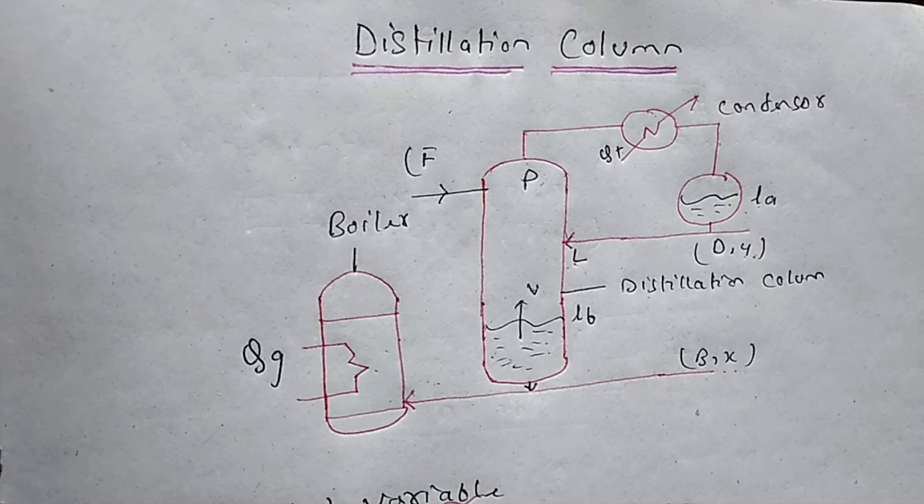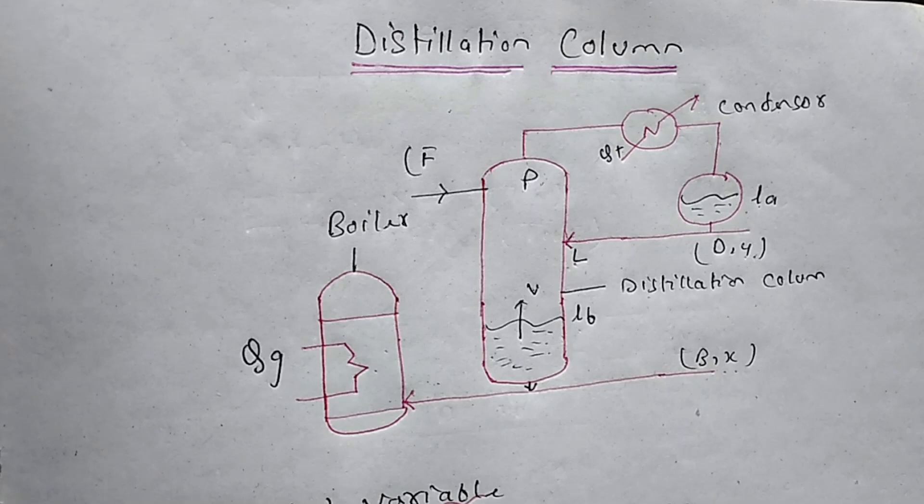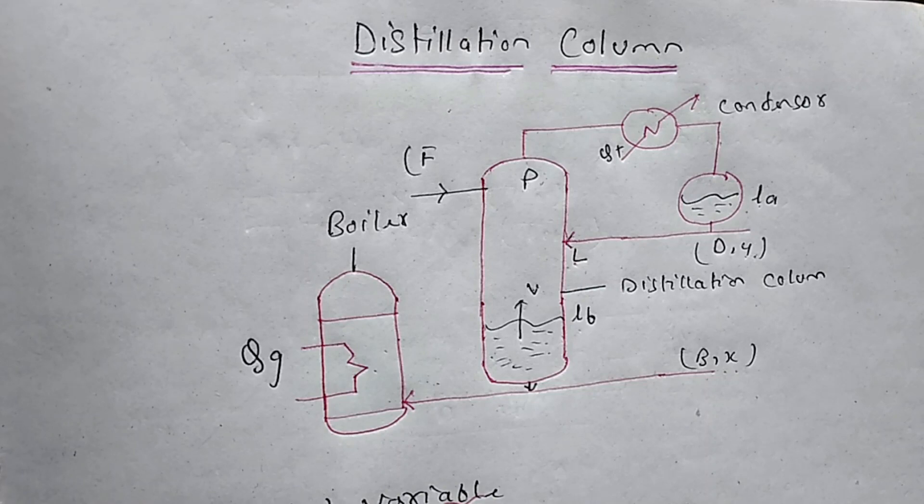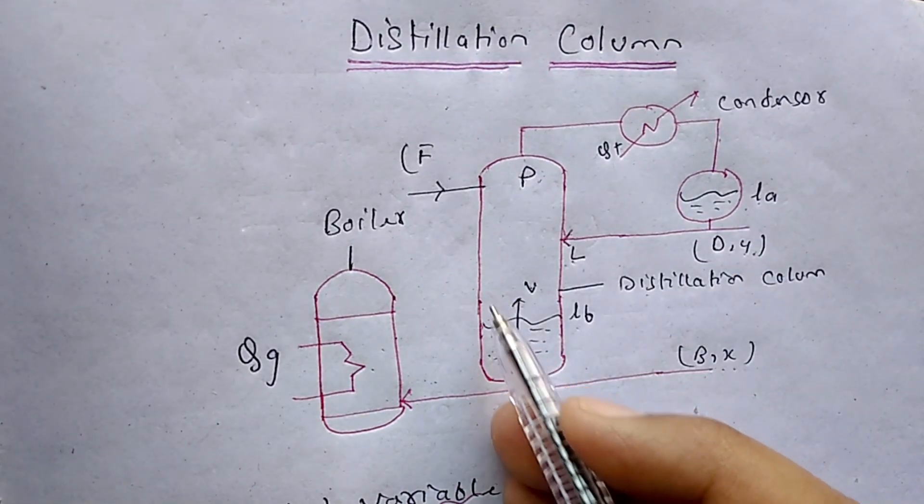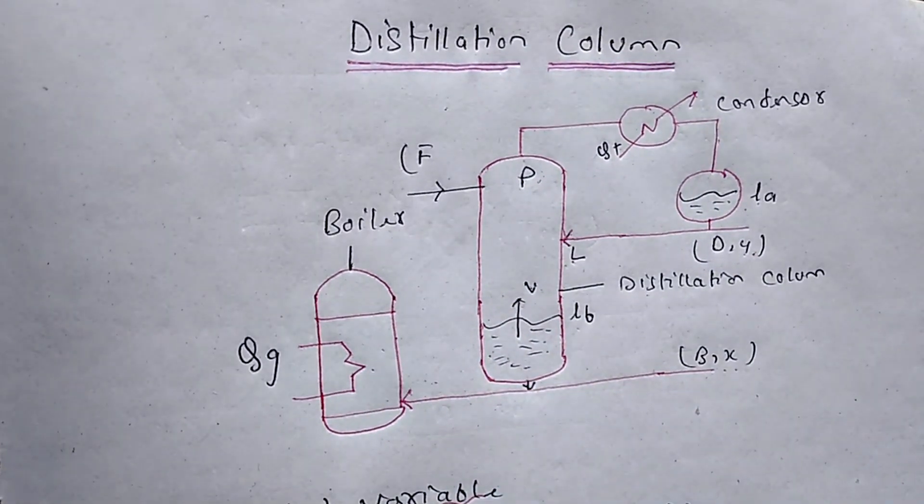Distillation is a process in which a liquid or vapor mixture of two or more substances is separated into its component fractions by removal of heat. How it happens? Simply, the lightest product exits from the top of the column and the heaviest product exits from the bottom of the column.